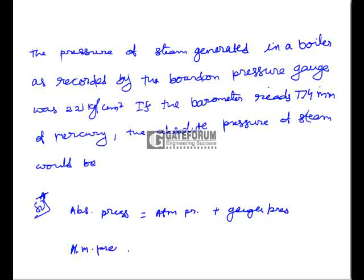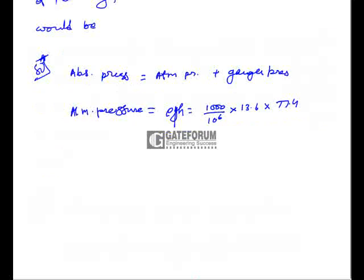Atmospheric pressure equals ρgh. Writing in centimeters: ρ = 1000 kg/m³ = 1000/10⁶ kg/cm³. The specific gravity of mercury is 13.6, and H = 77.4 cm. There is no need to separately apply specific gravity since we are calculating in kg per centimeter square.